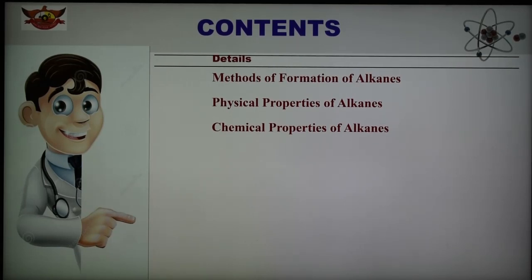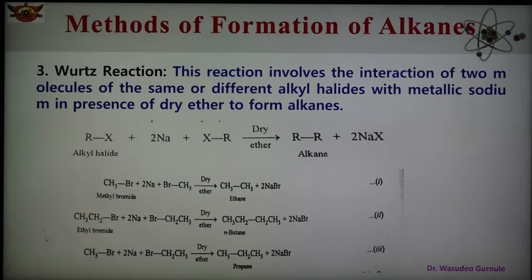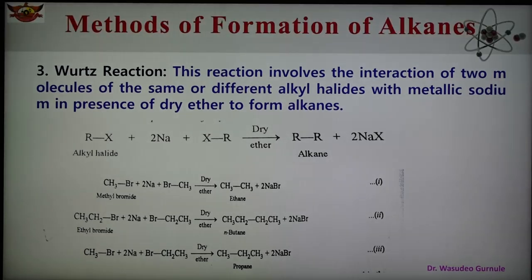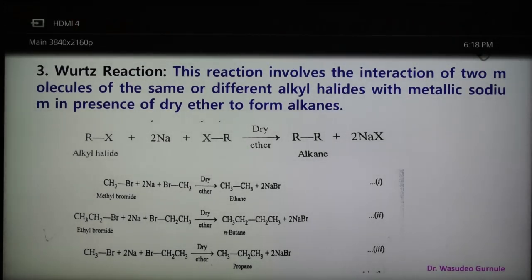The first method of formation of alkane — direct and indirect reduction — we have already discussed. The third method is the Wurtz reaction. This is a reaction involving the interaction of two molecules of the same or different alkyl halides with metallic sodium. This reaction takes place in the presence of ether and we get the alkane.